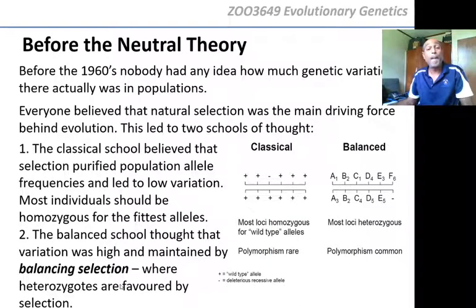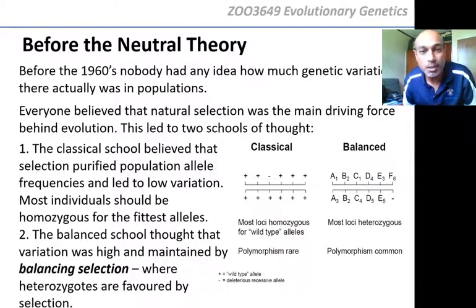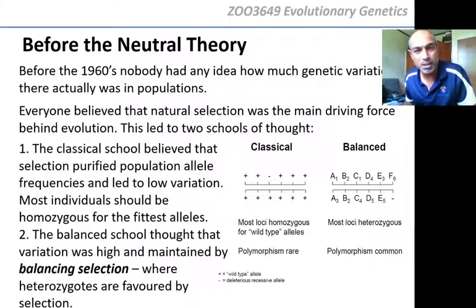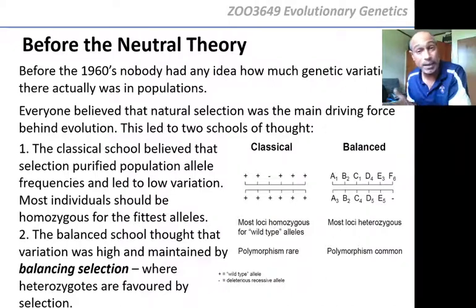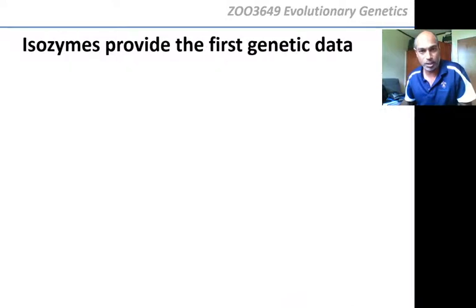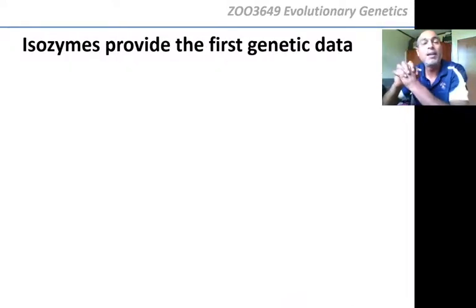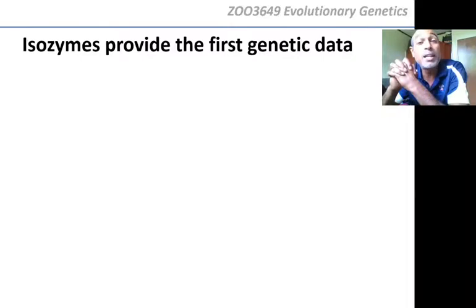Both of these schools were selection schools. This was before the neutral theory. Everybody thought it must be Darwin's idea causing all this evolution — either purifying selection or balancing selection. Then the 1960s came, and the very first molecular marker came onto the market: isozymes.